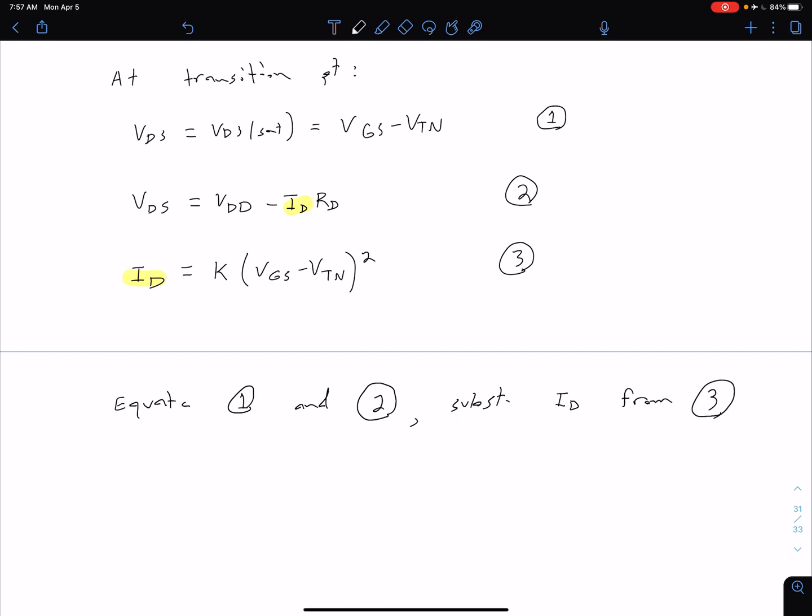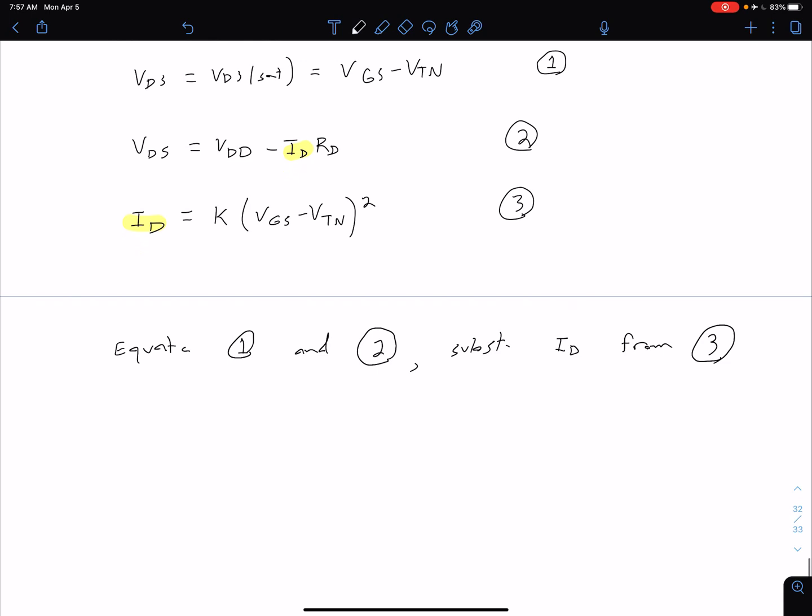So if we do that, we have from our equation one that our VDS is equal to VGS minus VTN. We have that that's equal to, from equation two, VDD minus ID times RD. But let's go ahead and substitute in for our ID. We know that that is equal to KN times the quantity of VGS minus VTN squared.